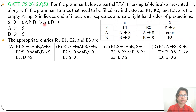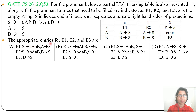Let's solve one previous question on parsing. This question is from LL1. I already discussed how to construct an LL1 parse table — just go through that video. Here, a partial LL1 parsing table is given along with a grammar, and E1, E2, E3 are blank entries. This is an interlinked question with question number 52.